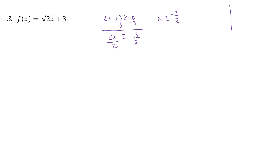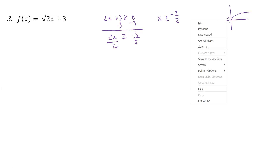Now the square root — if we have just a strict square root, it starts there and goes like that. But we've shrunk it and shifted it to the left, so it's over here at negative one and a half, so it looks something like that.